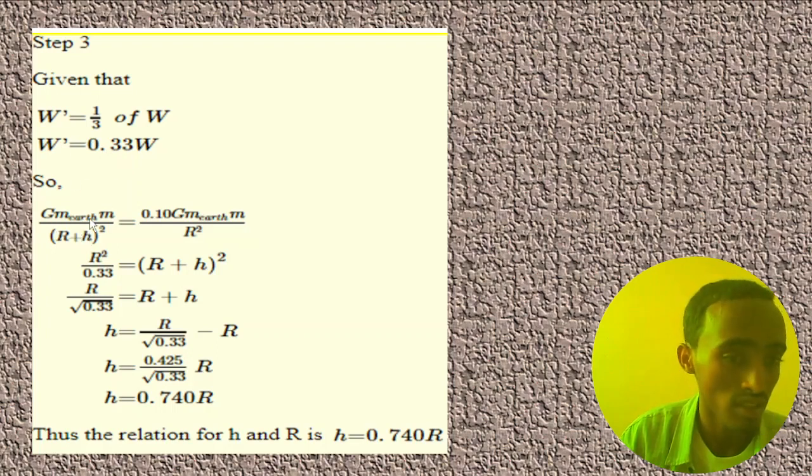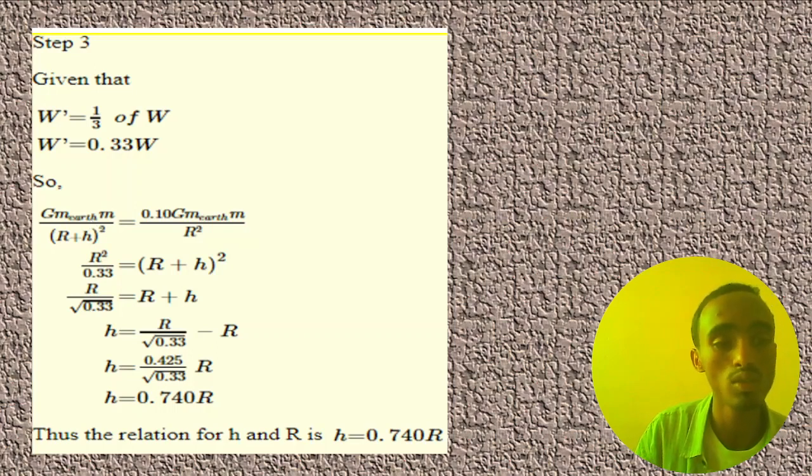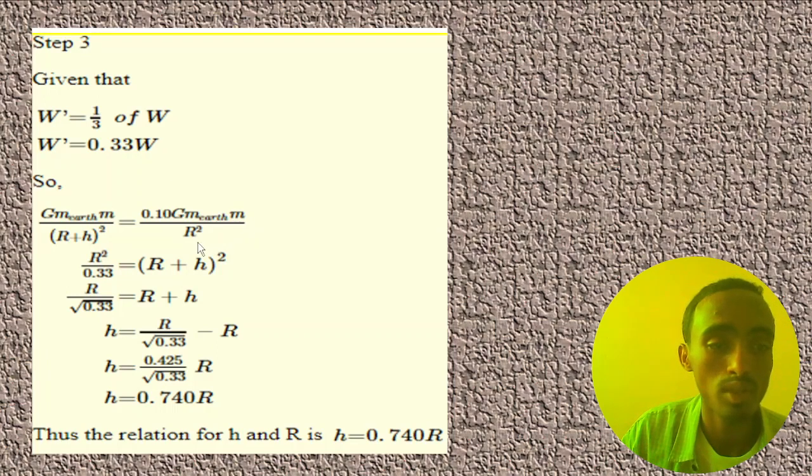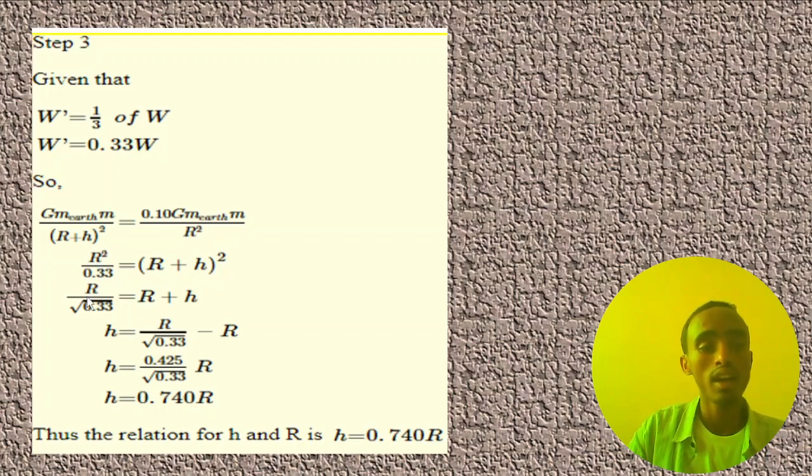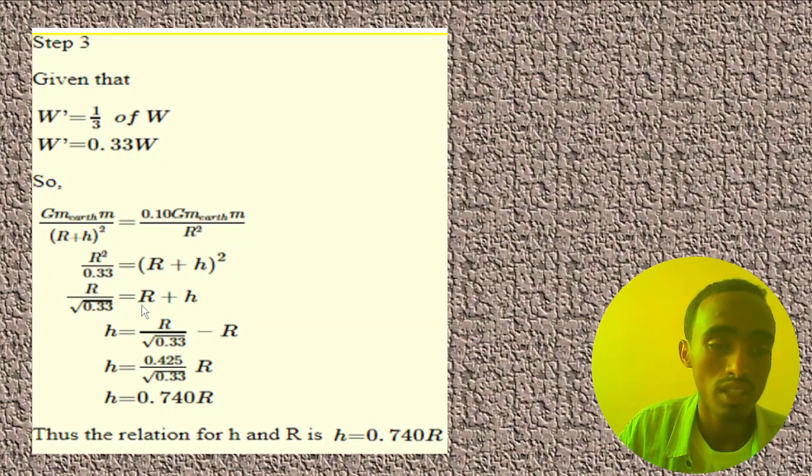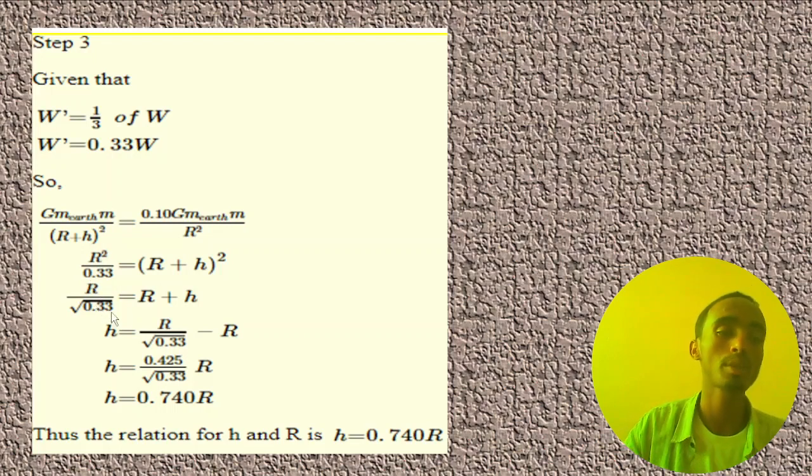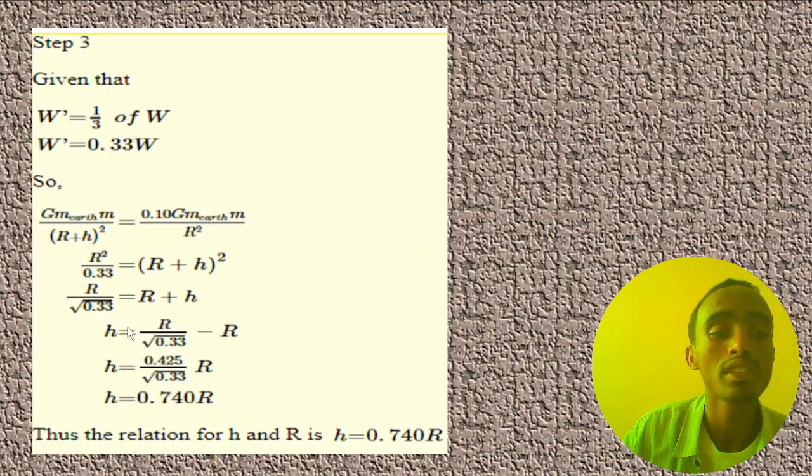When we set up the ratio, gravitational constant times mass of Earth times m over (R + h) squared equals one-third times gravitational constant times mass of Earth times m over R squared. Working through the algebraic steps and simplifying the equation.